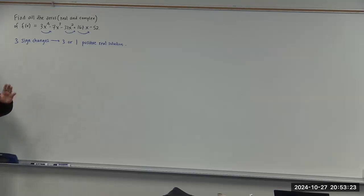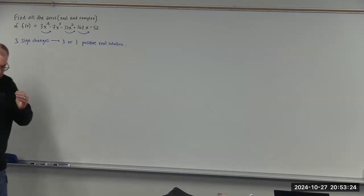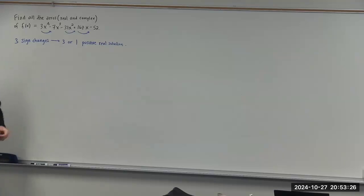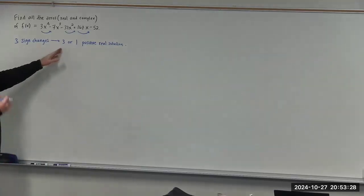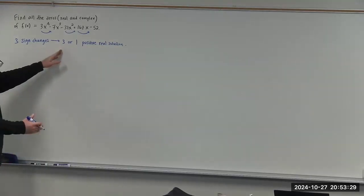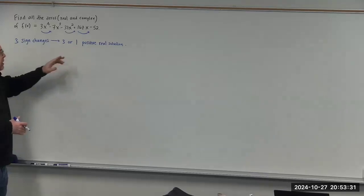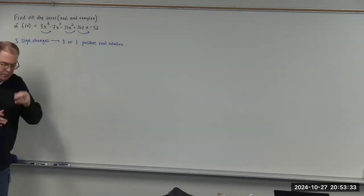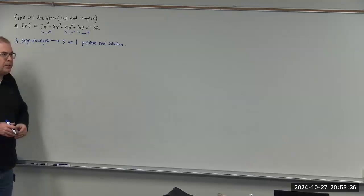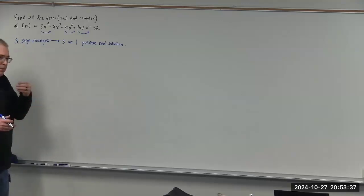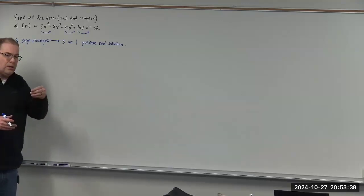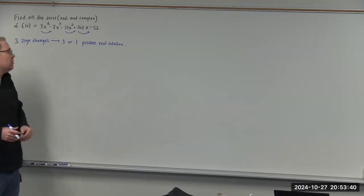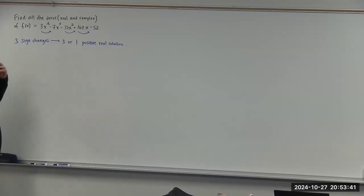Remember, you always count down by an even amount. So if we have three sign changes, the possibilities are three or one. If it were five, it would be five, three, or one. If it were four, it would be four, two, or zero.